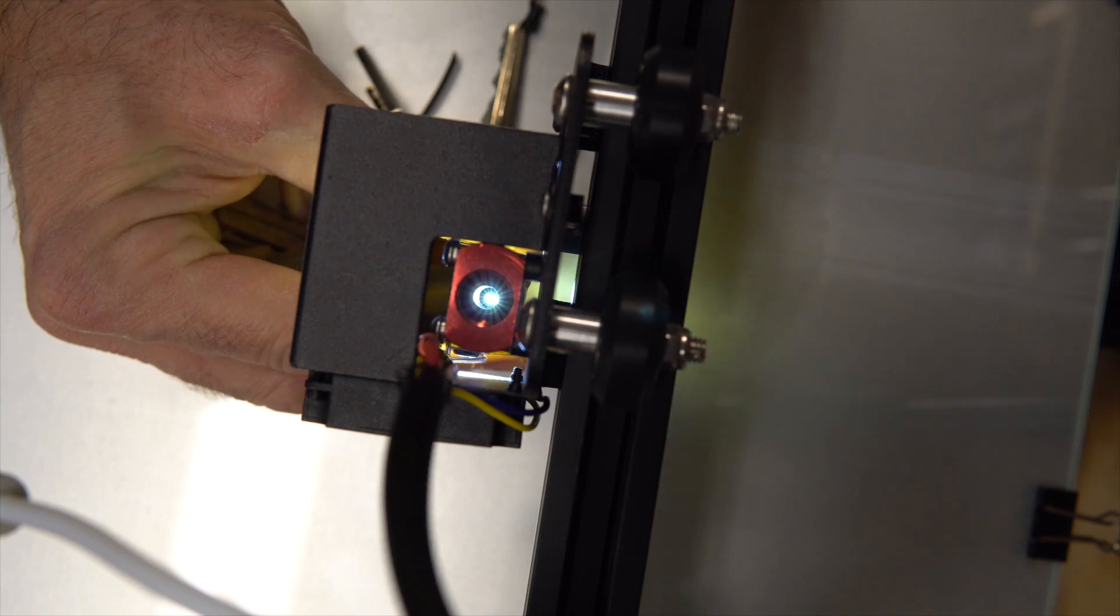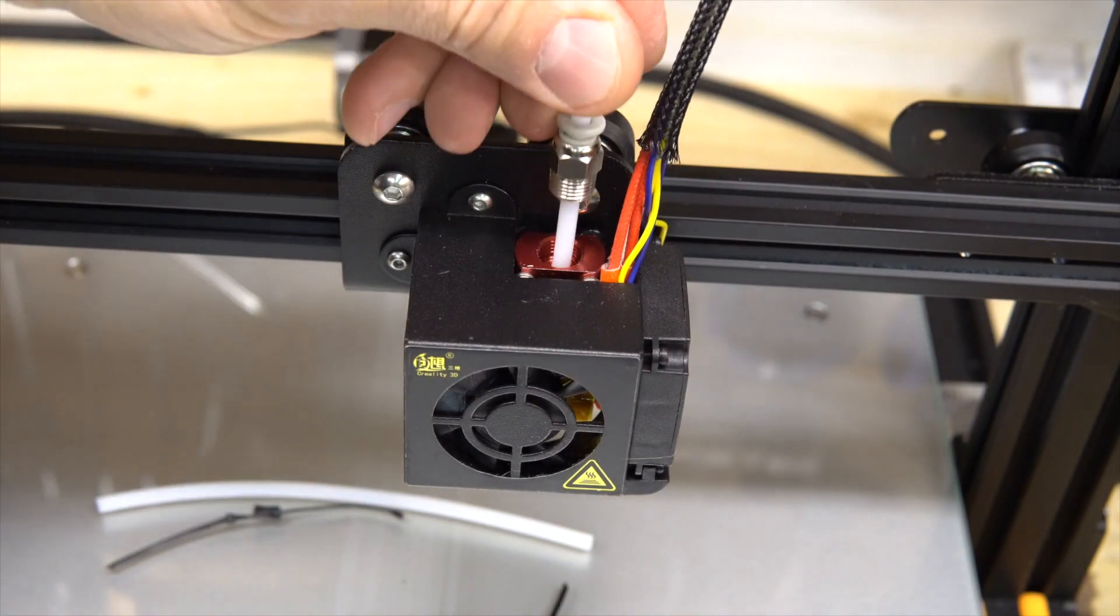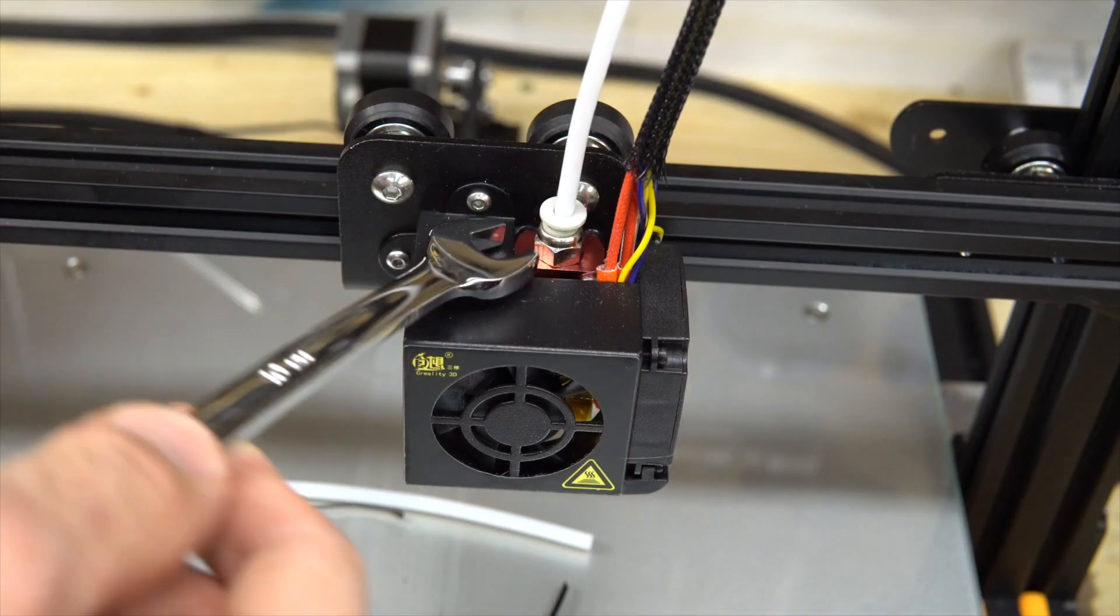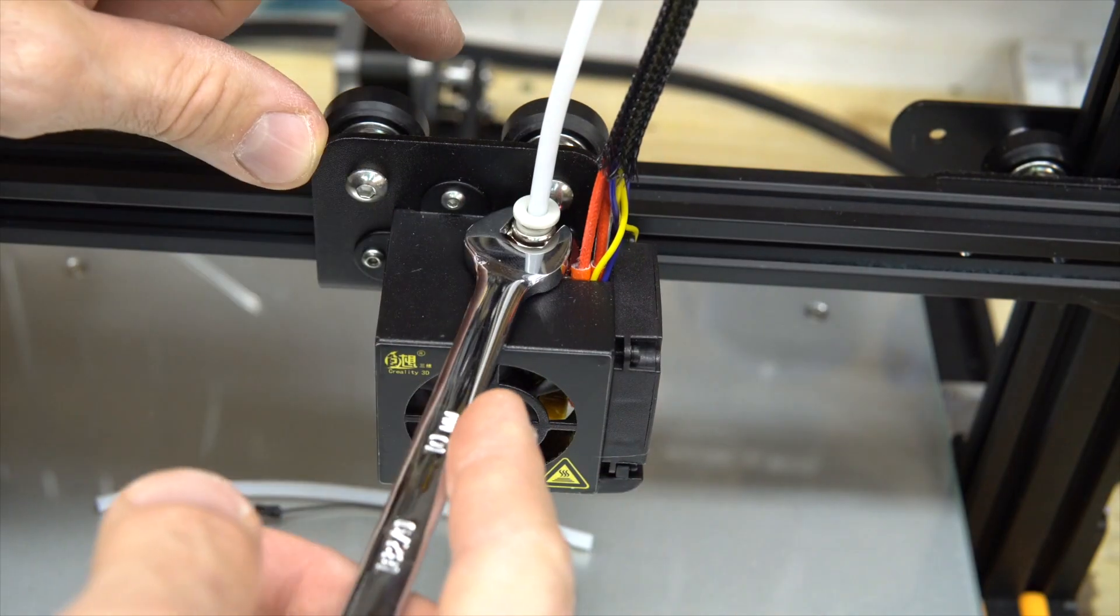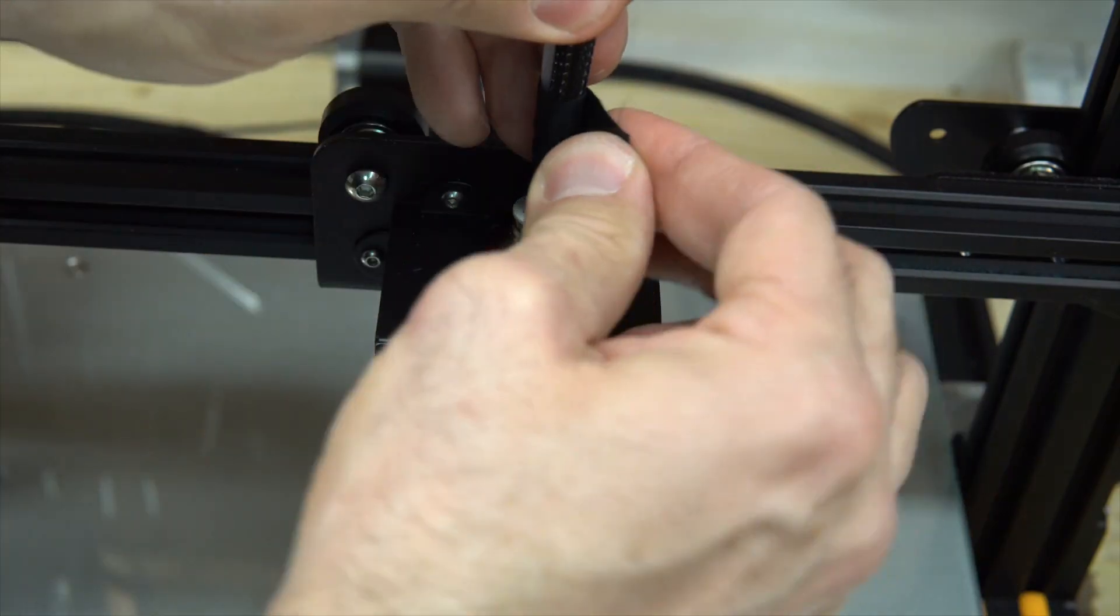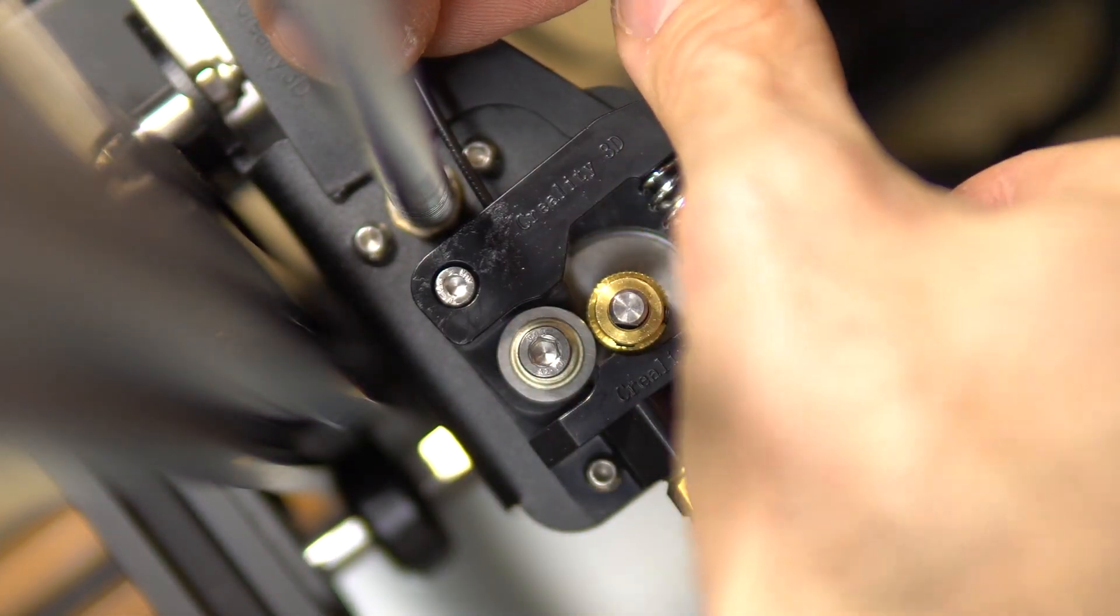So reassemble. Put back the tube, reinstall the fitting, and do not over-tighten this fitting, just finger tight. Replace the little tape and to help you guide the filament, play with the lever to guide it inside the hole.